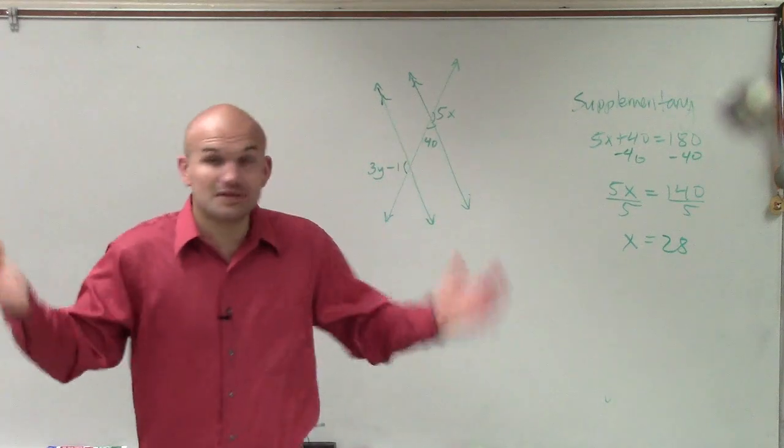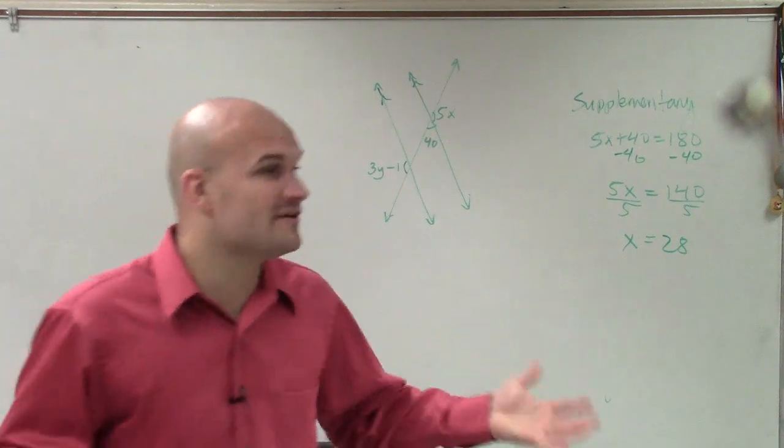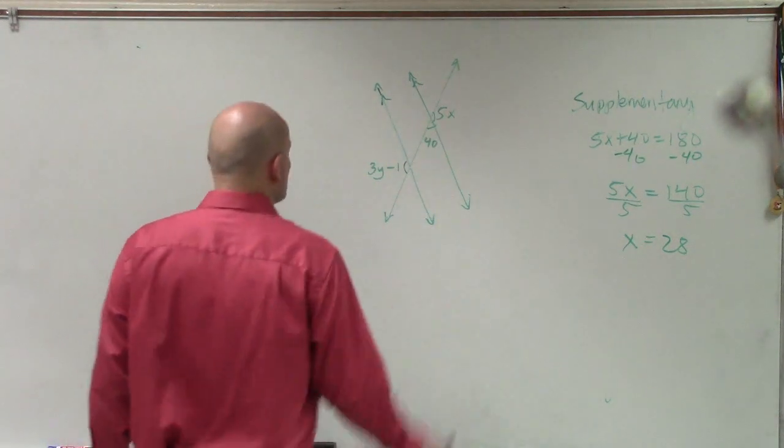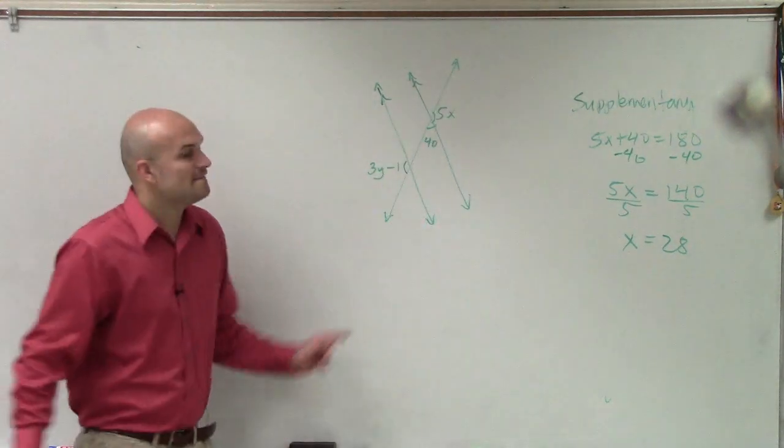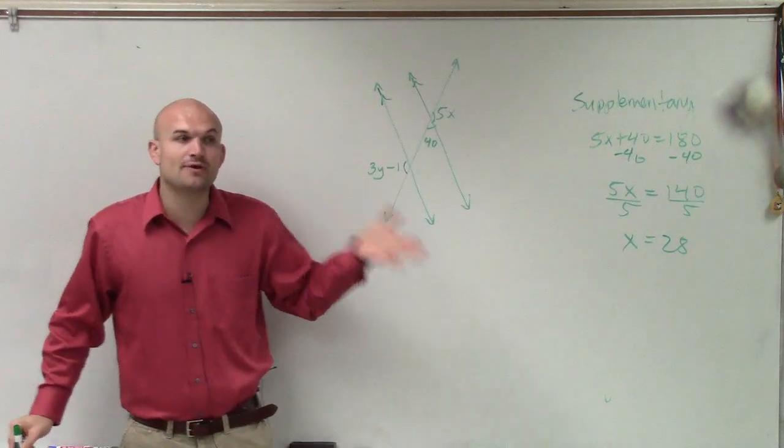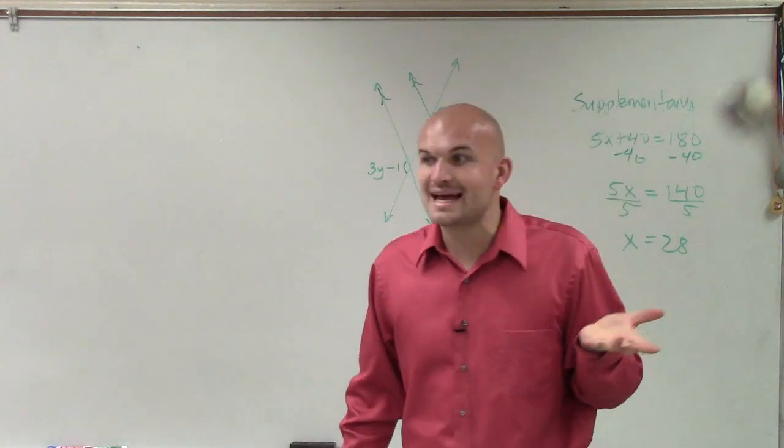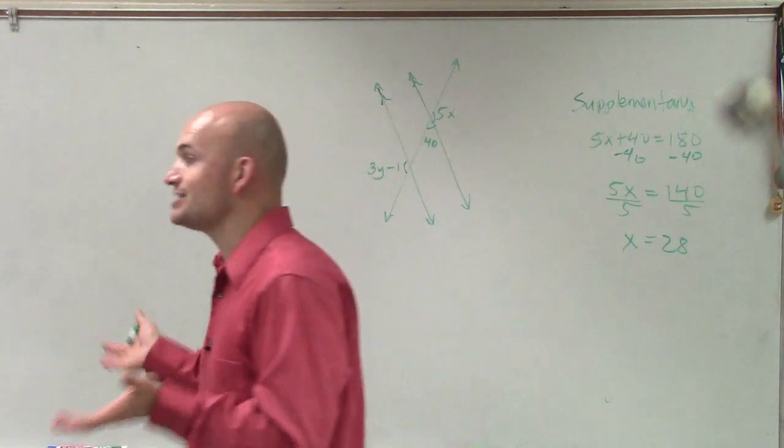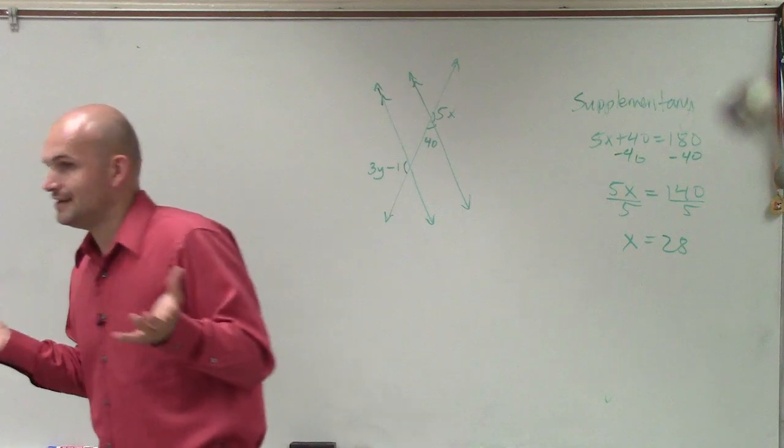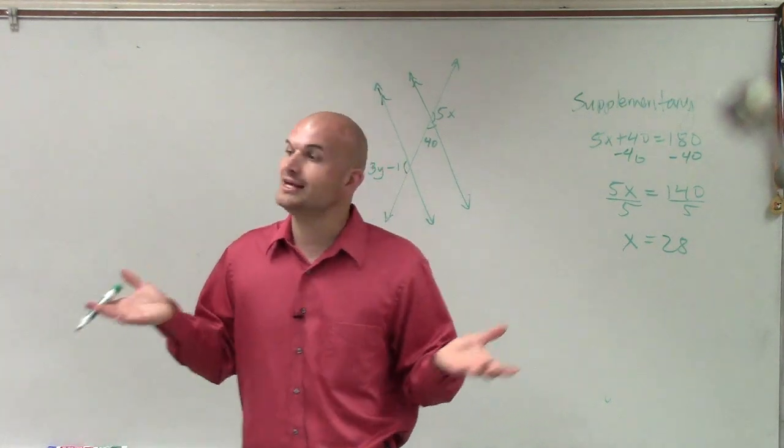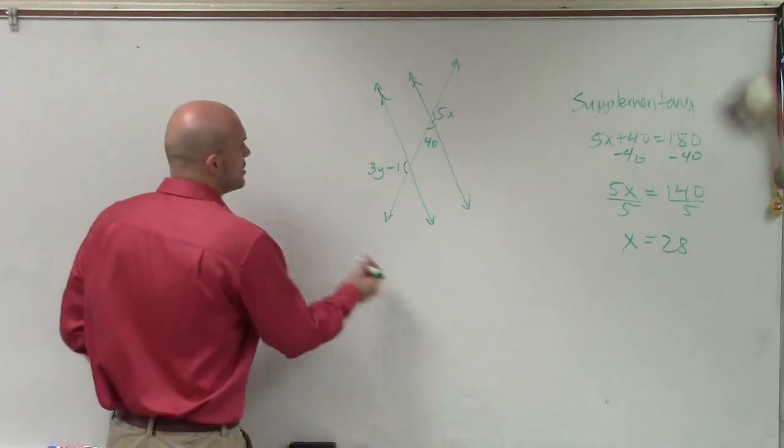Well, ladies and gentlemen, I'm still not done. I still need to figure out what y is going to be. So I look at this, and I remember I said 5x and 3y minus 1, those are what we call alternate exterior angles. And we know alternate exterior angles are equal in measure to each other.